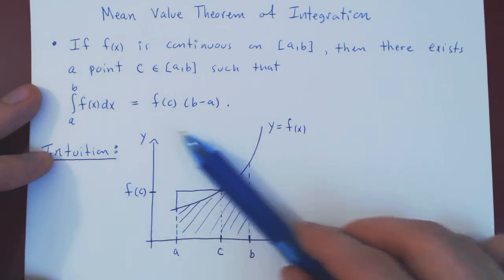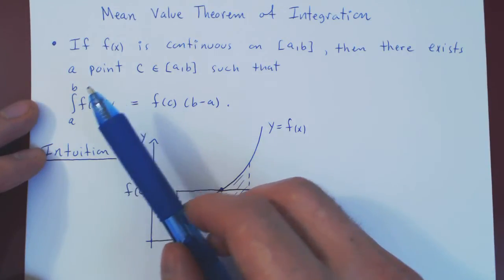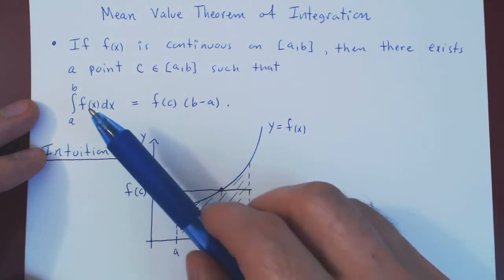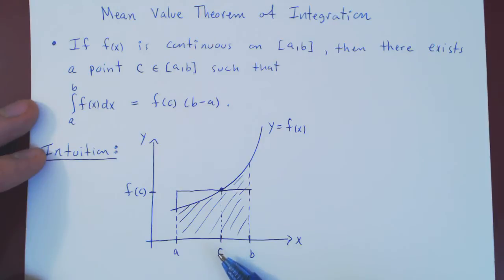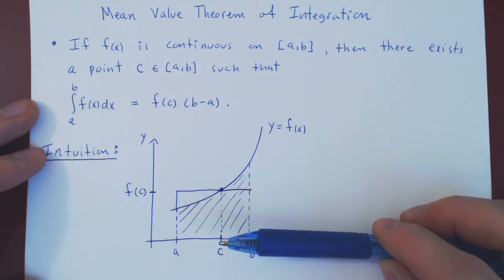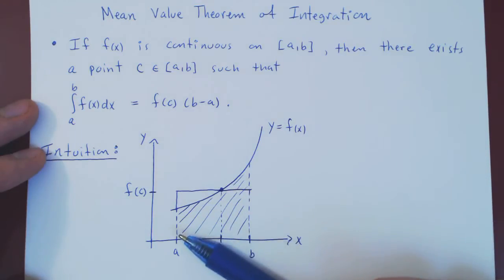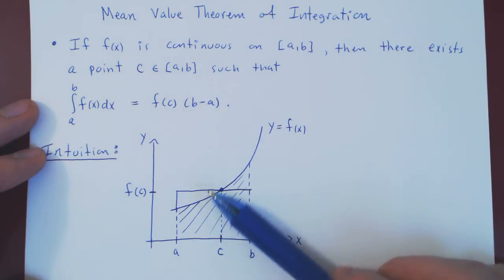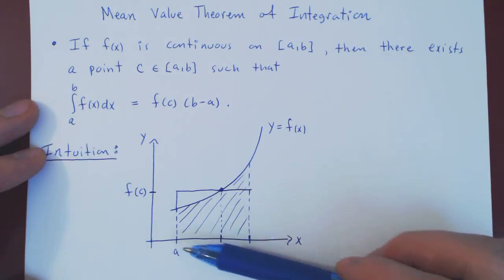And that is the statement of the mean value theorem. In general, the integral of f of x dx from a to b gives the net area below the curve over the interval. If the function is continuous — so there's no break in the function over the interval — there has to be a sweet spot between a and b where, if you take f of c to be the height of your rectangle and b minus a the length of the interval, the area of this rectangle is exactly the same as the exact area below the curve over the interval from a to b.